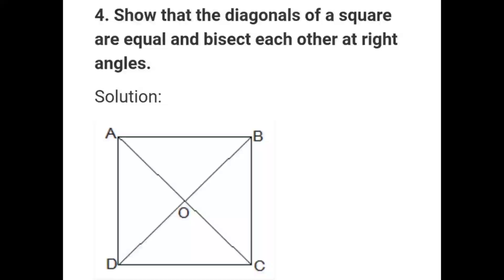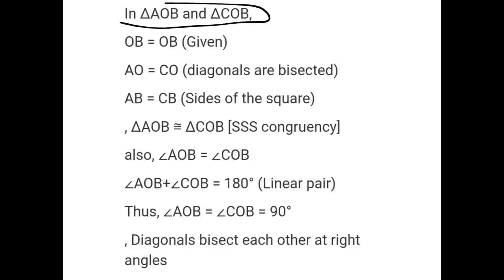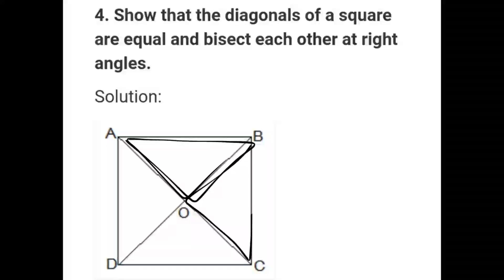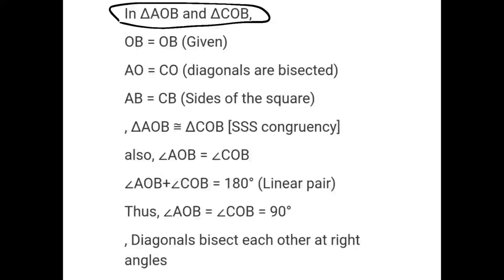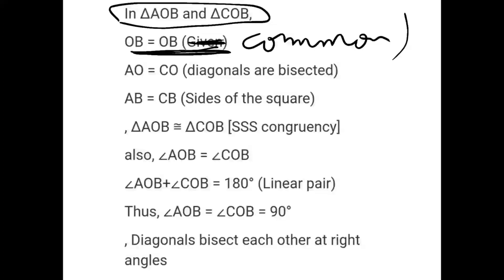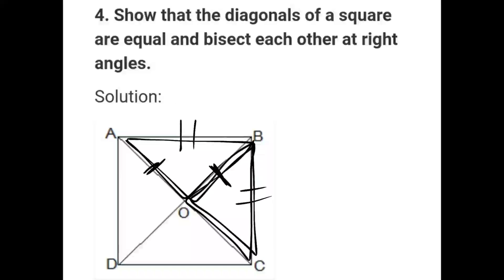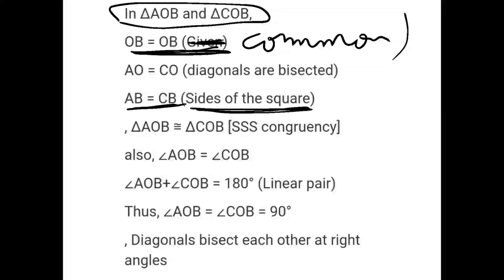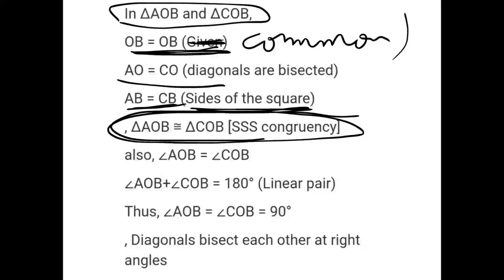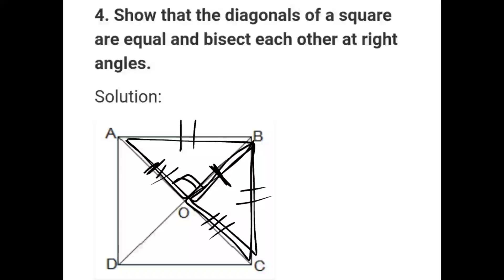Similarly, let's choose triangles AOB and COB. OB is common. AB equals BC — these are sides of the square. AO equals OC — from the second part, already proved. So the whole triangle is congruent. If the whole triangle is equal, this means angle AOB plus angle COB equals 180 degrees.